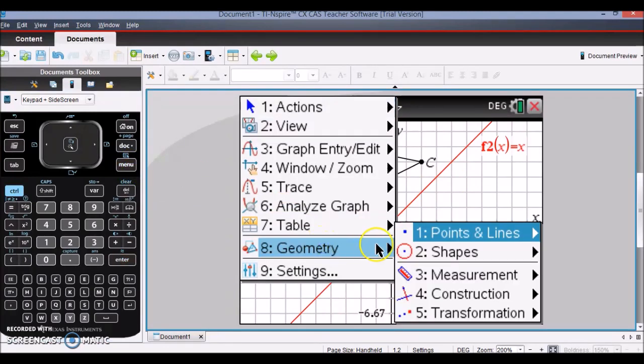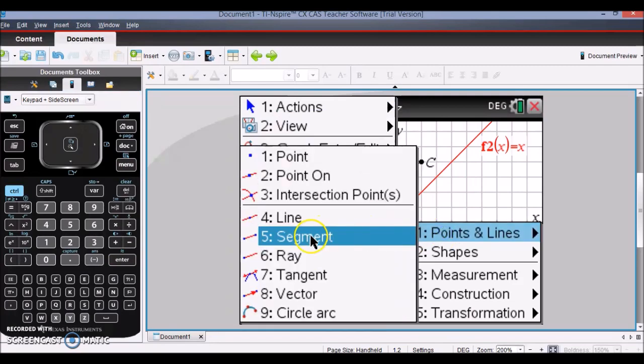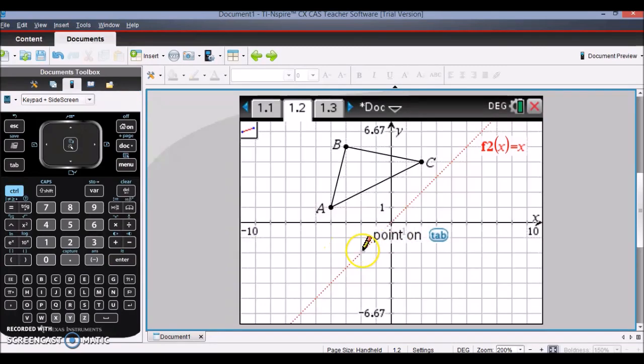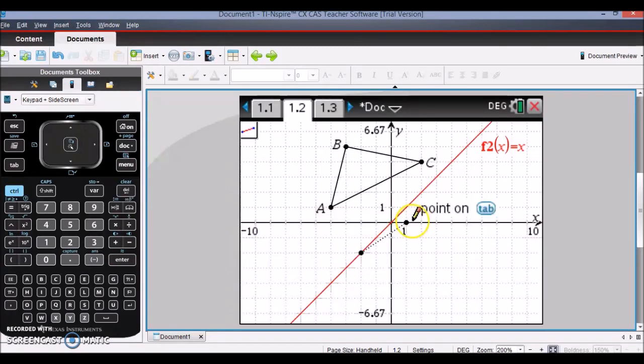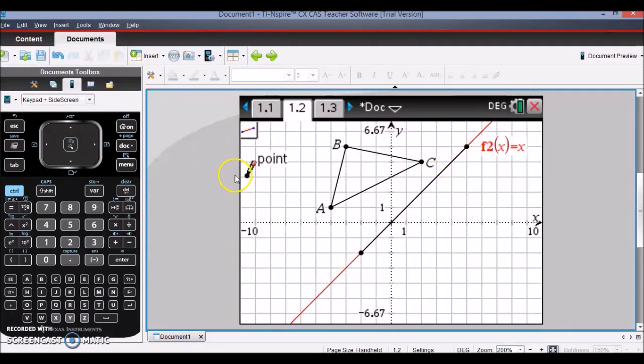Geometry, Points and Lines, and Line Segment. And so I just need to select two points that are on the line. If you already knew what the line y equals x looks like, you could go straight to just constructing this line segment.